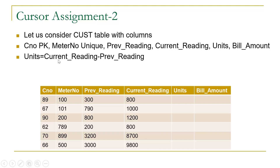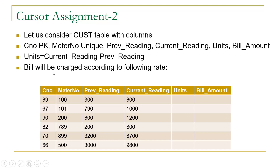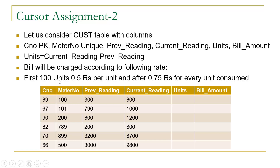We have to calculate the value of units by subtracting previous reading from current reading. To calculate the bill amount, the following conditions apply: for the first 100 units, 0.5 rupees per unit is charged. After the first 100 units, 0.75 rupees per unit is charged for every additional unit consumed.